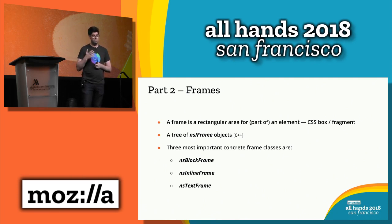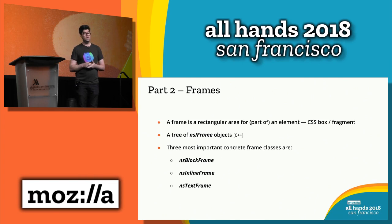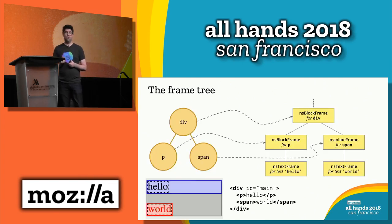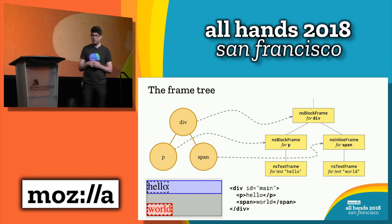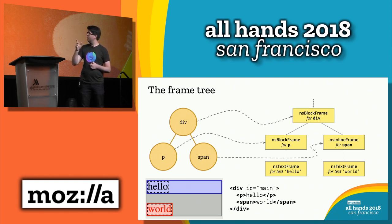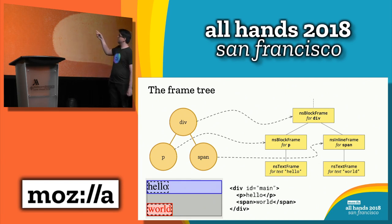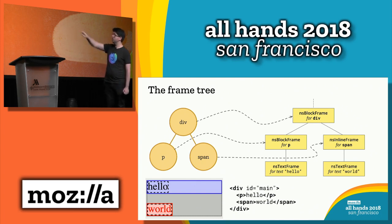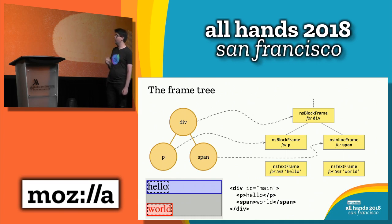In the simple example, the frame tree is straightforward: every element has one corresponding frame. The div gets a block frame, the P gets a block frame, the span gets an inline frame — the block for P and the inline for span are children of the block for the div. The two text nodes get text frames each. The diagram shows the P's frame in blue, the span's frame in red, and dotted lines surrounding the text frames.